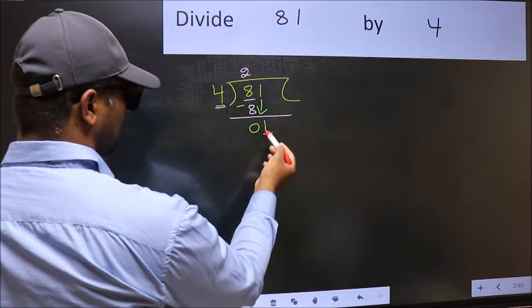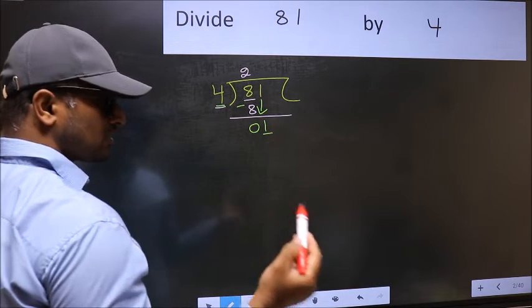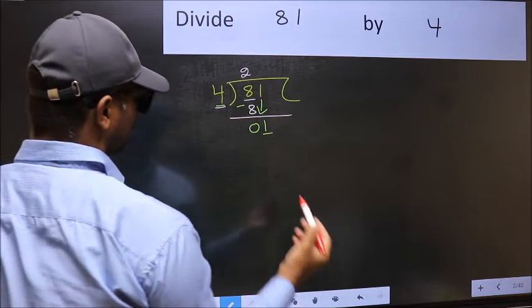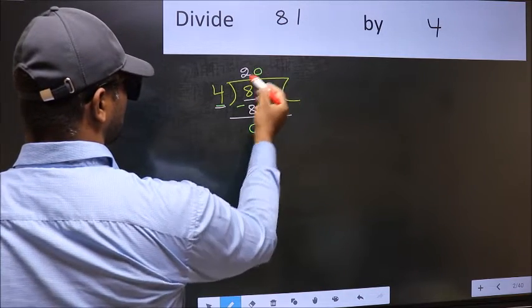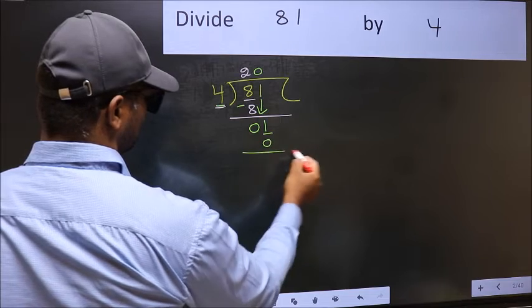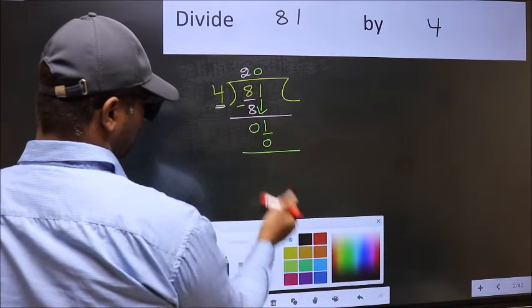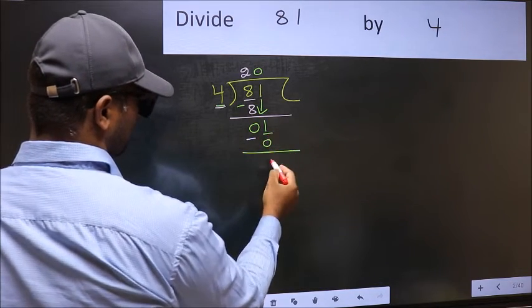So what we should do is, we should take 0. So 4 into 0 is 0. Now you should subtract. 1 minus 0 is 1.